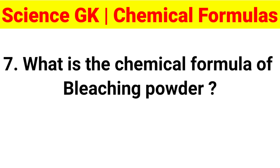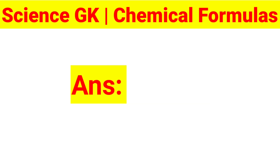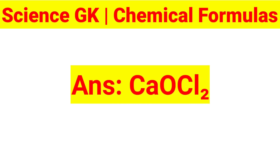Question 7: What is the chemical formula of bleaching powder? Answer: Ca(OCl)2.